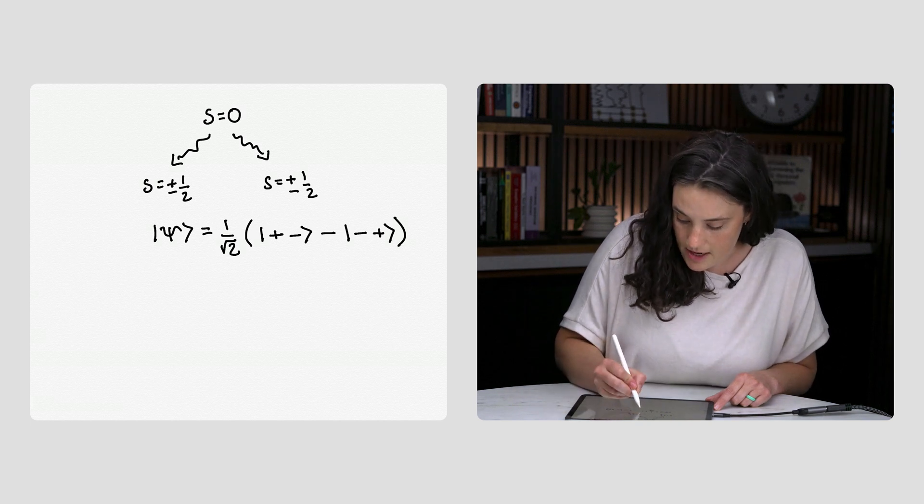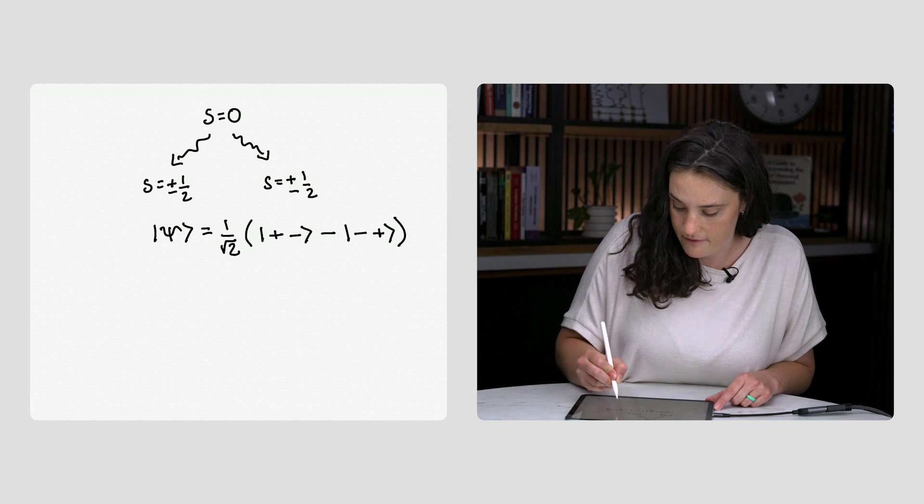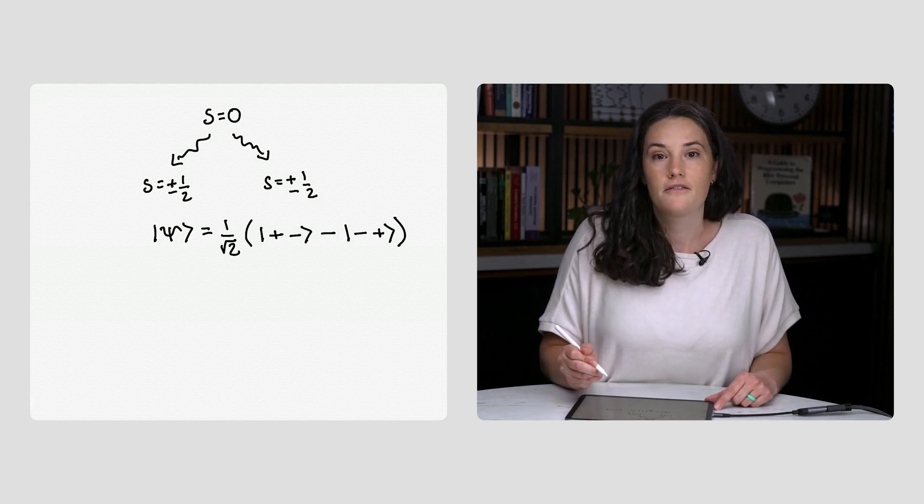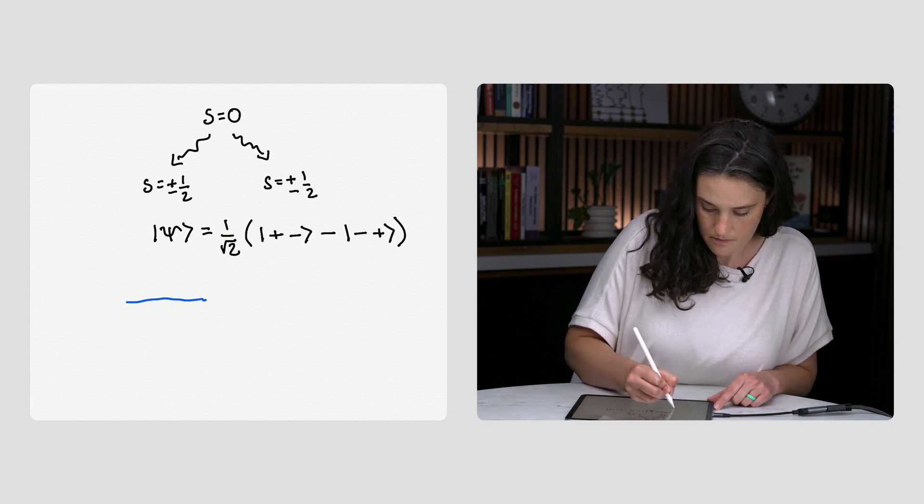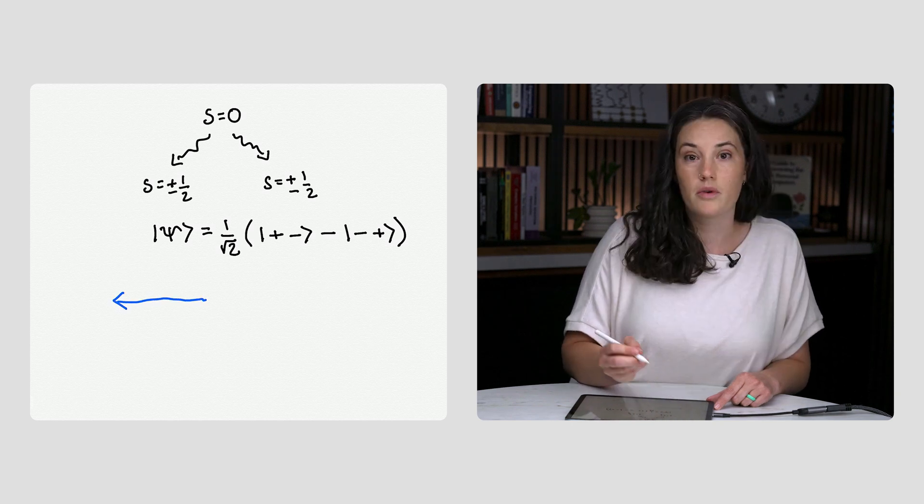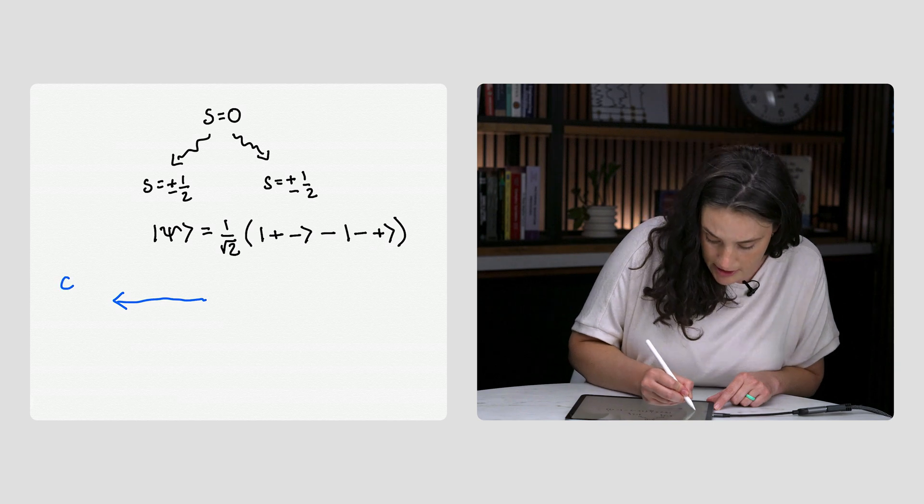So if one is measured to be up, the other one is down, and vice versa. Let's say particle one flies off to the left, or the minus x direction, where a researcher, who we'll call Lucas, measures its spin.